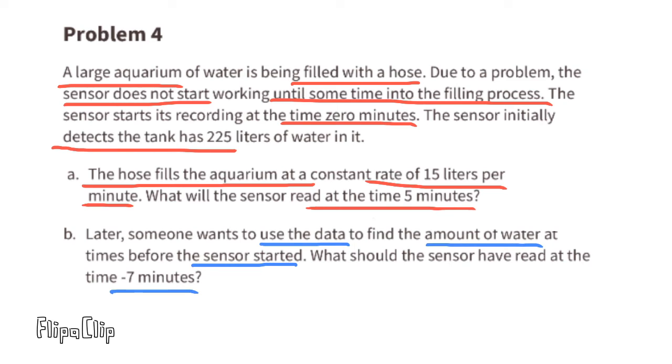Part b: Later, someone wants to use the data to find the amount of water at times before the sensor started. What should the sensor have read at the time negative seven minutes? We can use the previous equation, but we'll substitute the five with a negative seven. Now we have t equals 15 times negative seven plus 225. Since 15 times negative seven equals negative 105, t equals 225 minus 105, so t equals 120. At the negative seven minute mark, there should have been 120 liters in the tank.